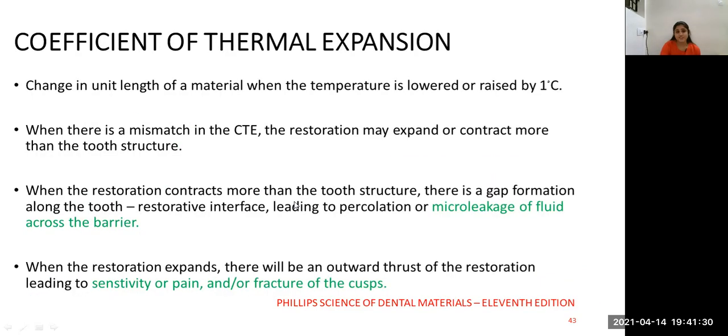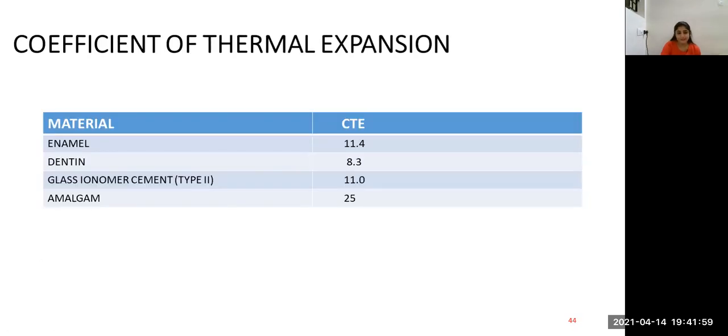Coefficient of thermal expansion is a change in unit length of the material when the temperature is lowered or raised by one degree Celsius. When there is a mismatch in CTE, the restoration may expand or contract more than the tooth structure. When the restoration contracts more than the tooth structure, there is a gap formation along the tooth restorative interface leading to percolation or microleakage of fluid across the barrier. When the restoration expands, there will be an outward thrust of the restoration leading to sensitivity or pain and fracture of the cusps.